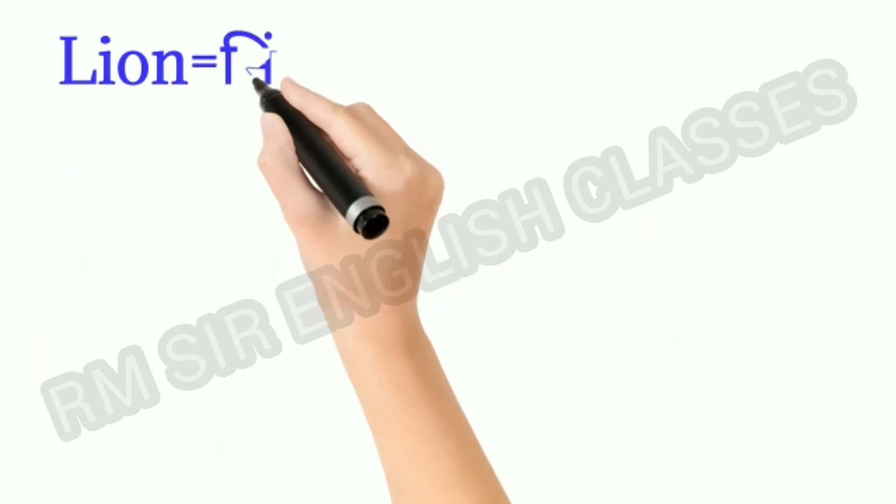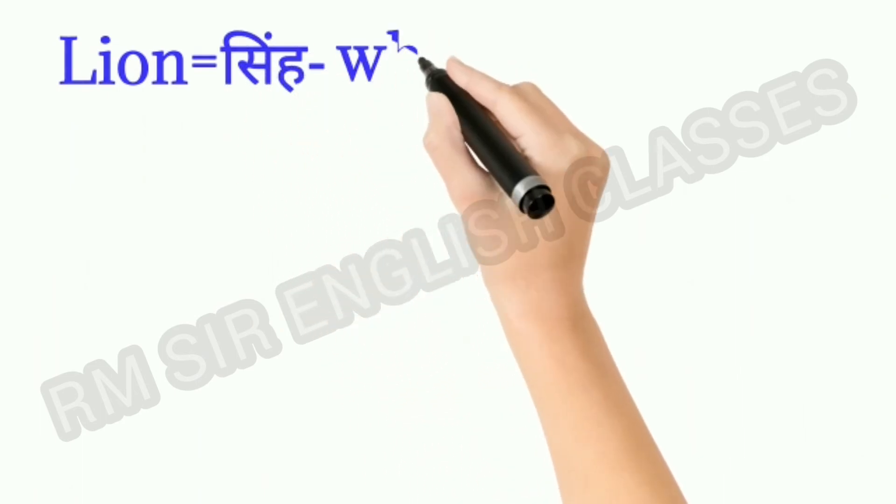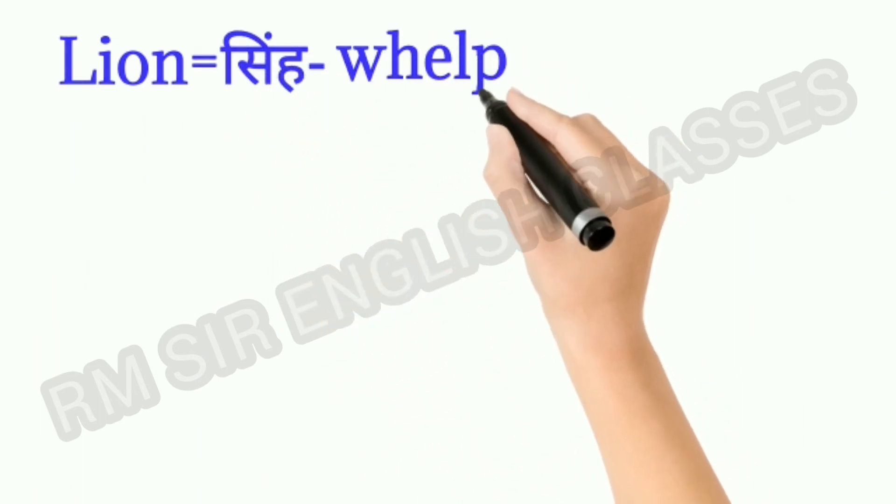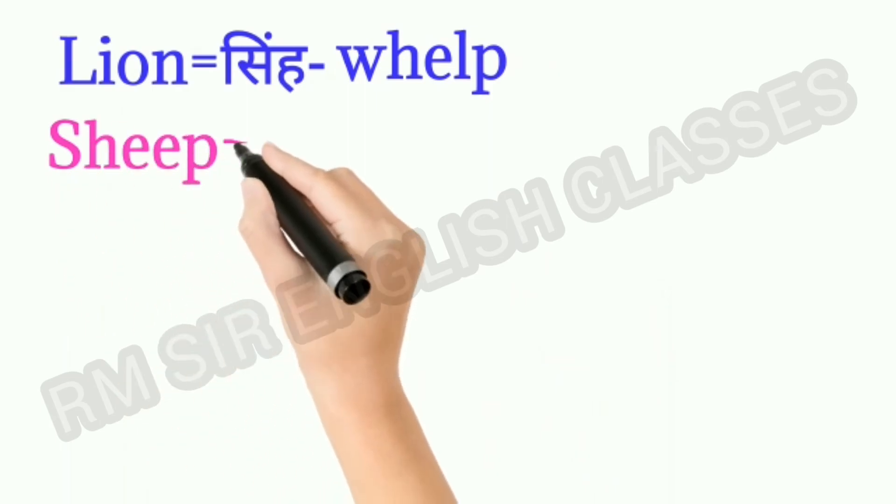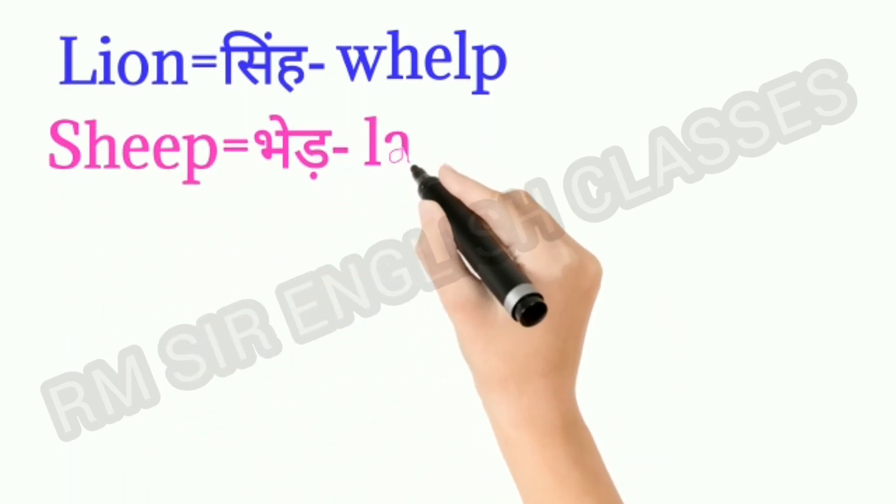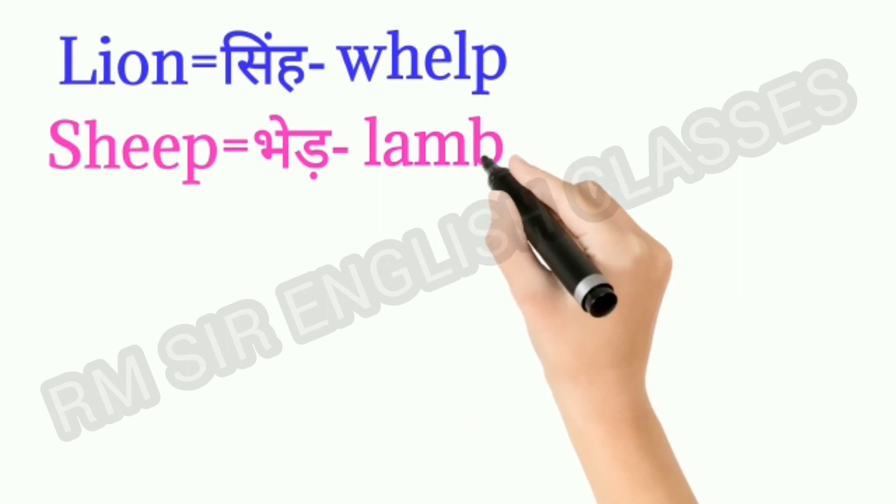Lion means singh. Baby lion is called whelp. Sheep means bhed. Baby sheep is called lamb.